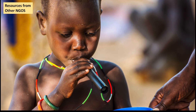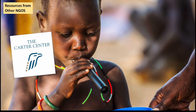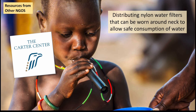Regarding the Carter Centre — one thing they provided that the Ghana Red Cross charity couldn't was personal water filters. These are literally made from nylon, hang around people's necks, and can be used to drink directly from the water because they filter out fleas and larvae. They're quite cheap, and millions have been distributed across Ghana and other countries in the world, thanks to the Carter Centre's global organisation.